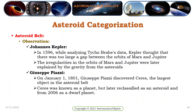There are various historical observations of note. Johannes Kepler, in 1596, when analyzing Tycho Brahe's data, thought there was too large a gap between the orbits of Mars and Jupiter. The irregularities in the orbits of Mars and Jupiter were later explained using gravity from the asteroids. On January 1st, 1801, Giuseppe Piazzi discovered Ceres, the largest object in the asteroid belt. Ceres was initially classified as a planet, but later reclassified as an asteroid, and from 2006 as a dwarf planet.